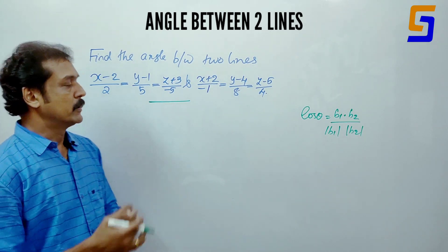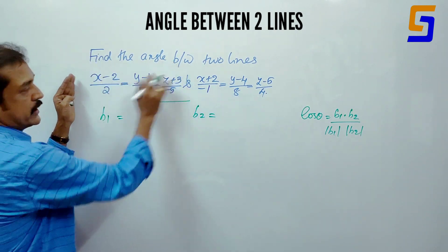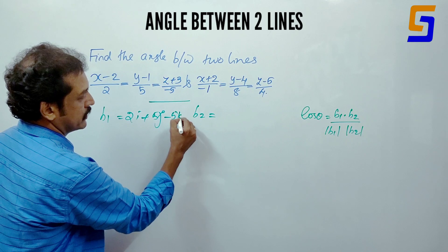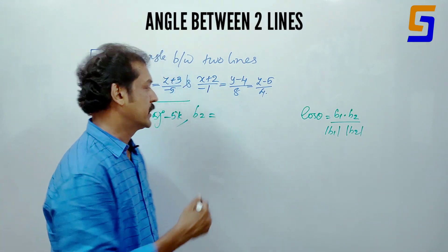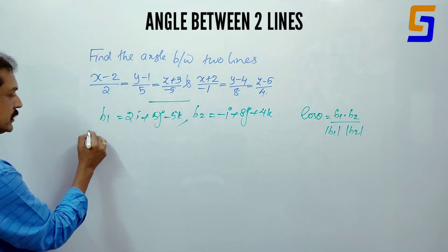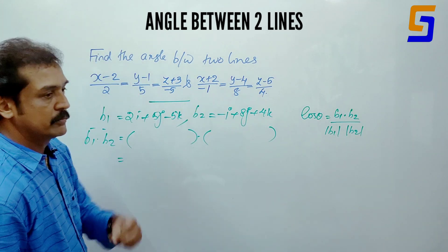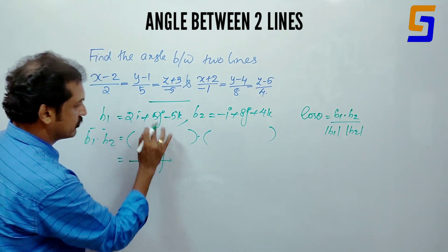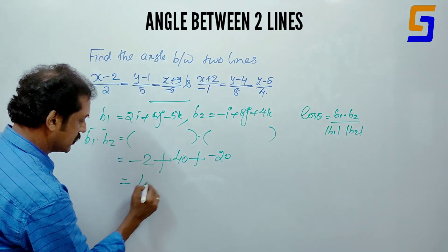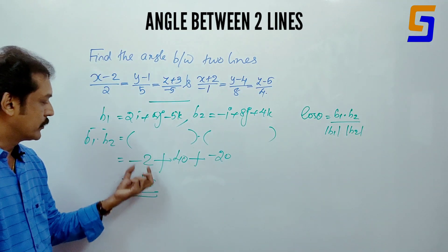Now for the Cartesian form, B1 is the first line denominator: 2i plus 5j minus 5k. B2 is the second line denominator: minus i plus 8j plus 4k. Then b1 dot b2 equals 2 into minus 1 (minus 2) plus 5 into 8 (40) plus minus 5 into 4 (minus 20). Answer is 18.